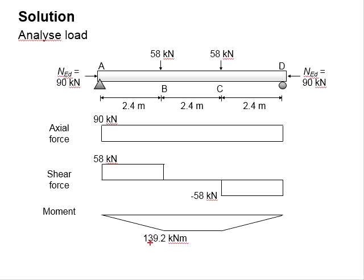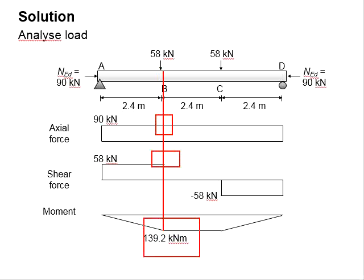Based on these three diagrams, the member is subjected to a 90 kN axial load, 58 kN shear force, and 139.2 kNm moment simultaneously, which occurs at the region between B and C.